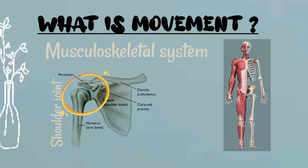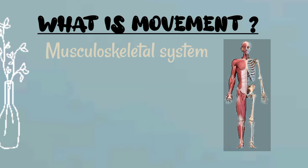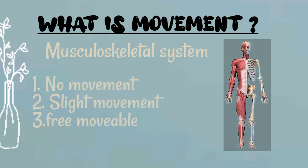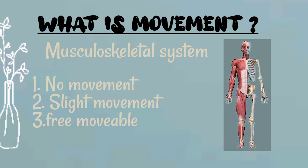A joint is a site where two or more bones articulate with one another. Some joints have no movement at all — for example, the sutures of the skull. On some joints, slight movement is possible, for example the vertebral column. And some joints are termed freely movable joints because a variety of movements are possible, for example the shoulder joint and the hip joint.